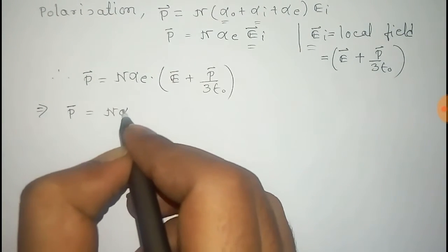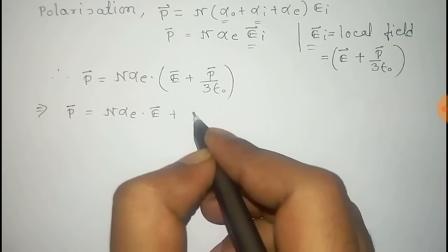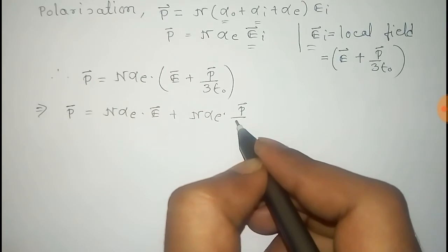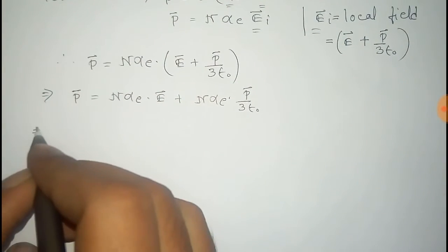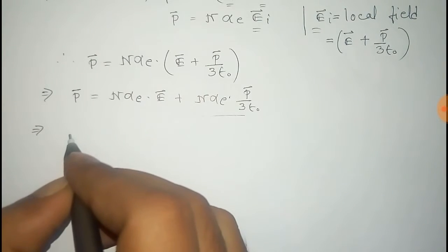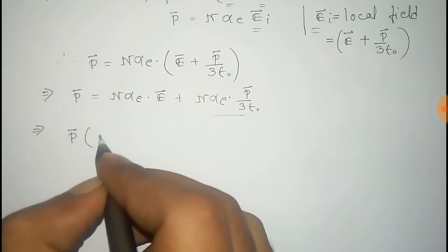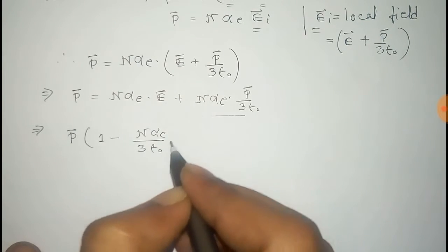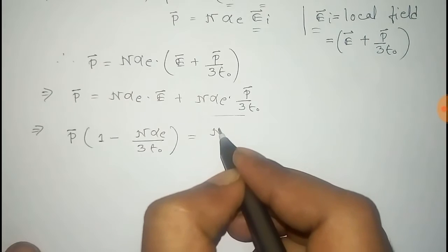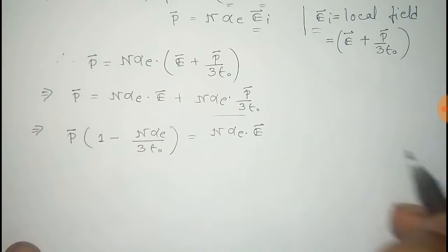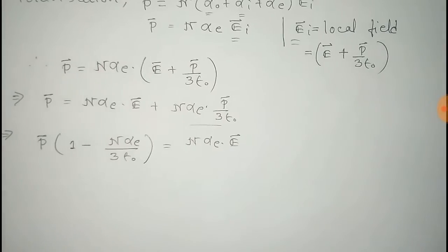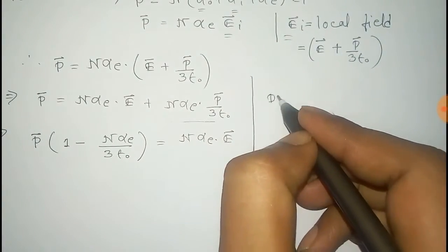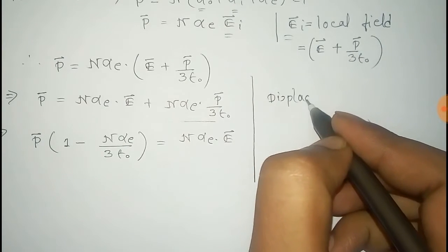Expanding this, P equals n·α·E plus n·α·P divided by 3·ε₀. Now taking the second term to the left side, we get P times (1 minus n·α divided by 3·ε₀) equals n·α·E.